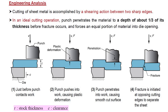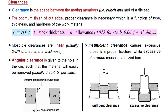Pay attention to the thickness of the workpiece being sheared and the gap between the punch surface and the die surface. Punch and die surfaces never create friction surfaces against each other — there is always some amount of gap, denoted as C. Clearance is basically the space between mating members, that is the punch and die of a die set. For optimum finish of the cut edge, proper clearance is necessary.